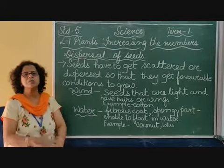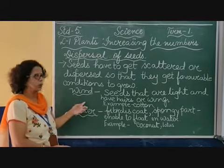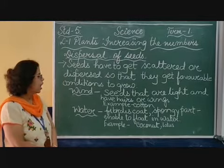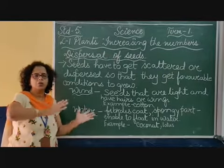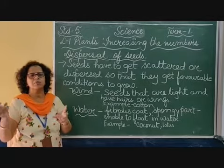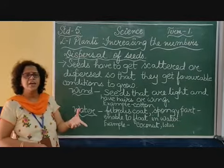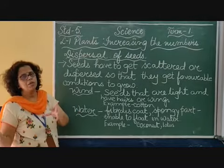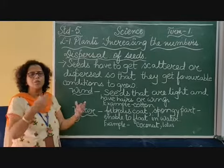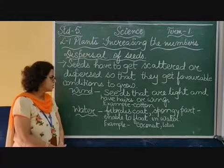There are various agents — things that help seeds to disperse or scatter from one place to another. The first agent is wind. Seeds that are light and have layers or wings are able to disperse by wind, just like wind carries sand and dust particles from one place to another. Seeds that are hairy or have wings can be dispersed by wind. Heavy seeds like mango cannot be dispersed by wind, but a cotton seed can be dispersed by wind.